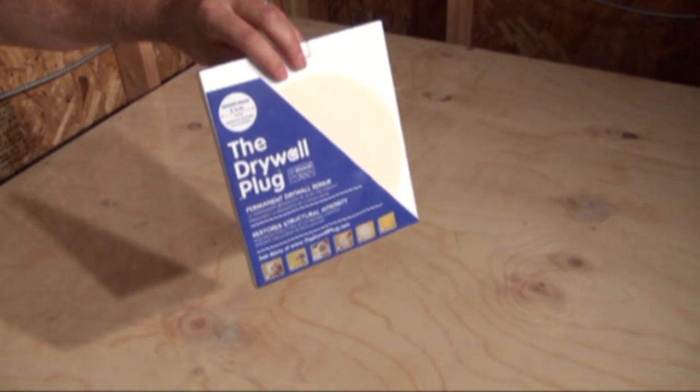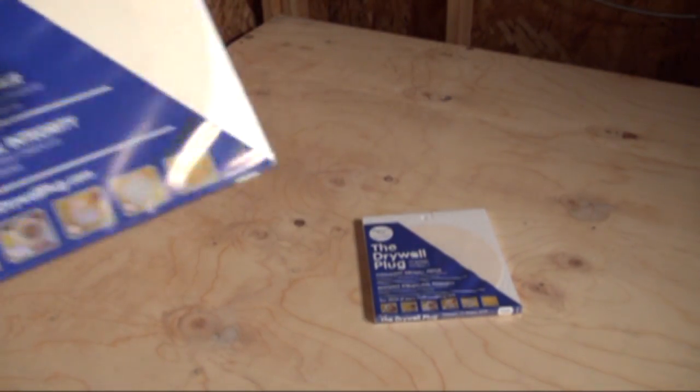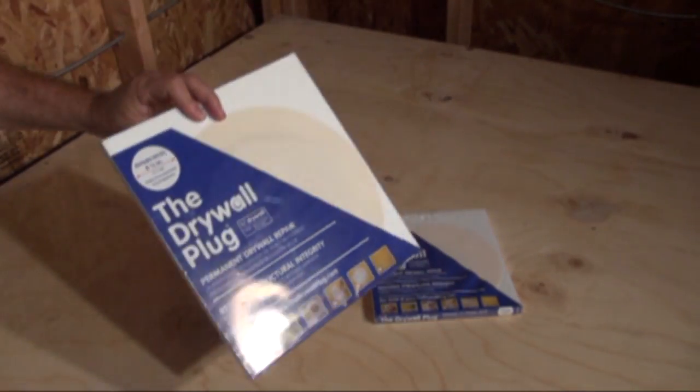The drywall plug comes in two sizes: the 3 and 7/8 inch diameter plug for holes the size of doorknobs, and the 6 and 7/8 inch diameter plug for larger holes.